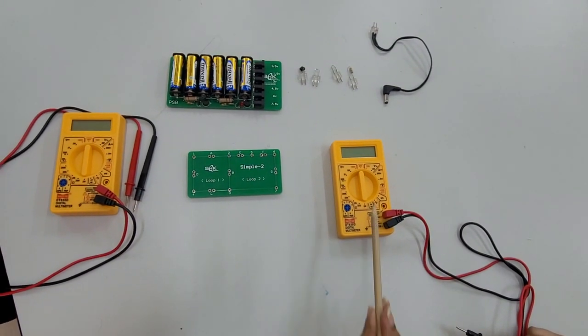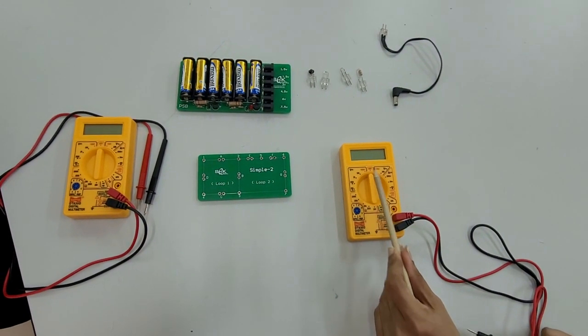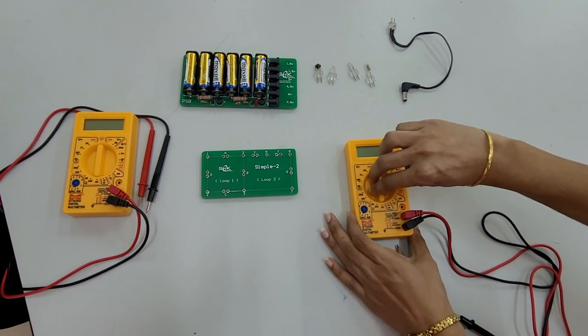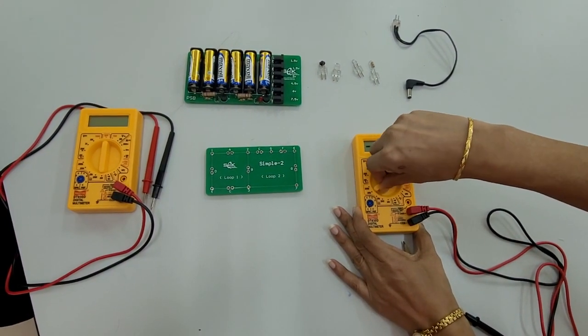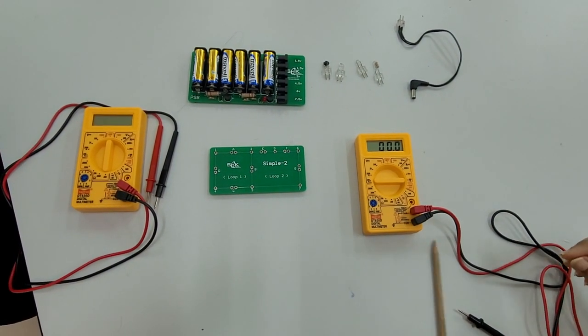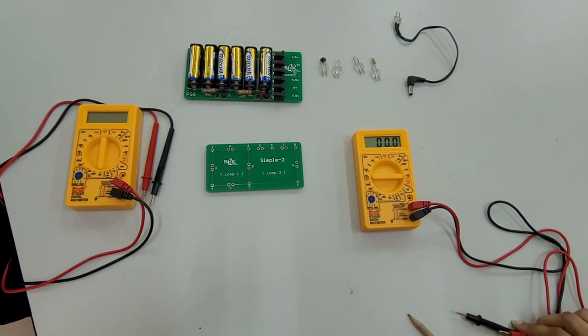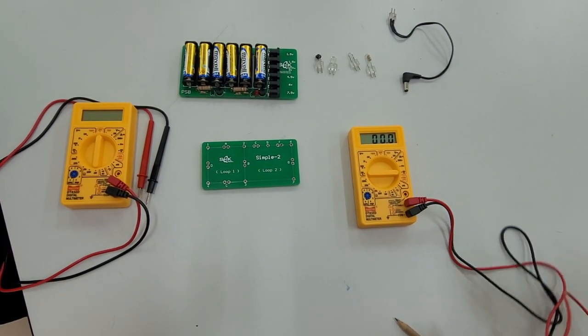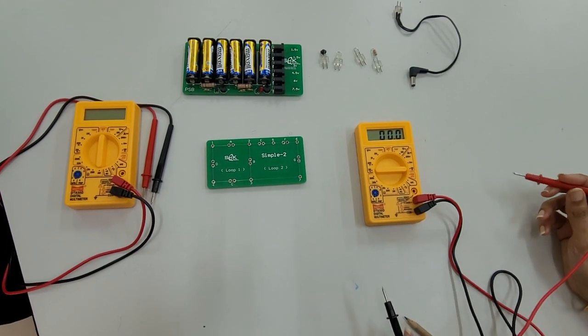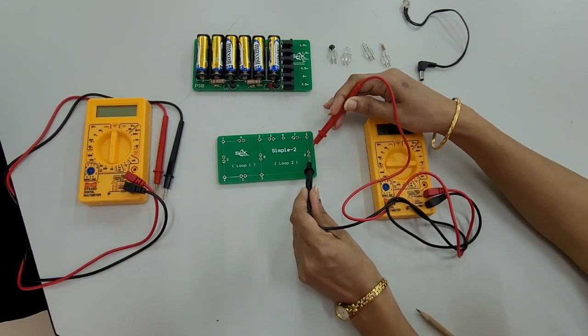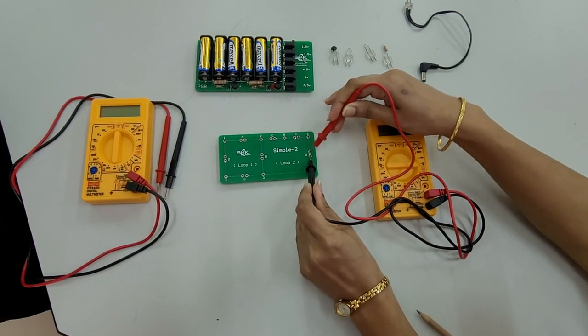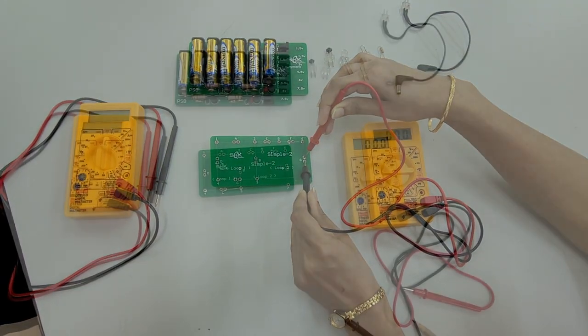The DMM is turned on and set to DCA mode and the range 200 milliampere, and insert the probes at the pair G. This DMM measures the current in milliampere.